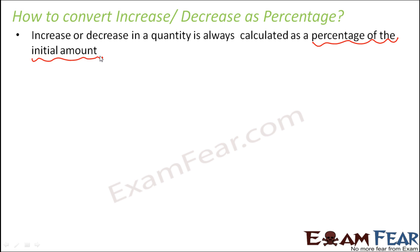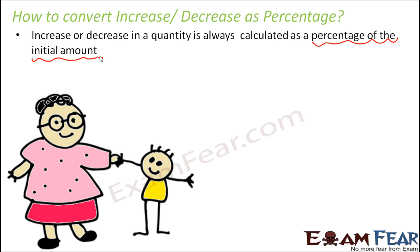For example, earlier your height was 130 centimeters and now your height is 150 centimeters. So basically this increase has happened on your initial height, on your existing previous height. So the percentage is always calculated on the initial amount. This is one very important point to be understood and remembered. Let us take an example.